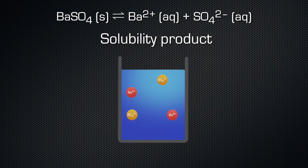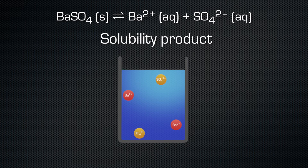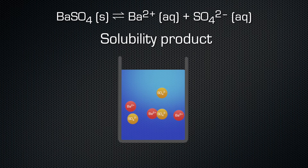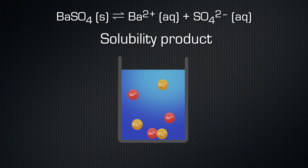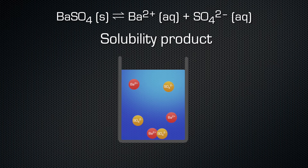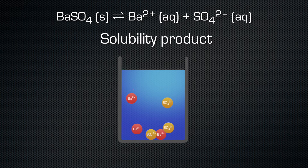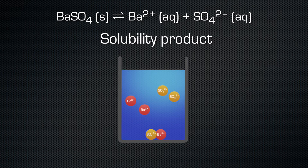If we have a saturated solution of barium sulfate, this system is in equilibrium state. If we add more barium sulfate, the excess does not dissolve macroscopically — if one particle dissolves, another particle precipitates. The concentration of the dissolved ions does not change anymore.